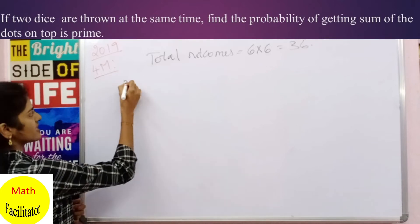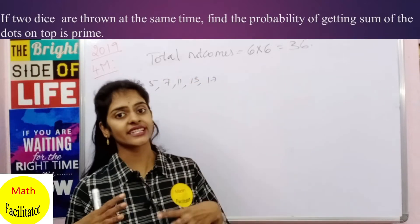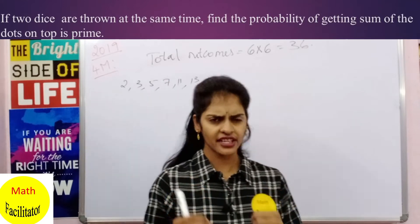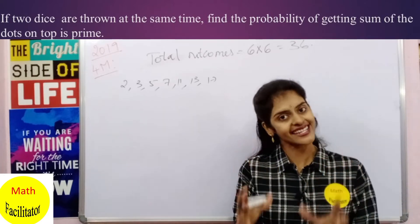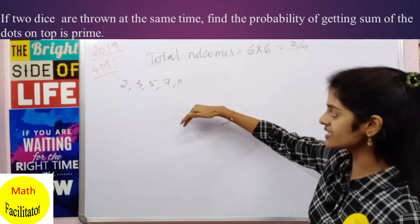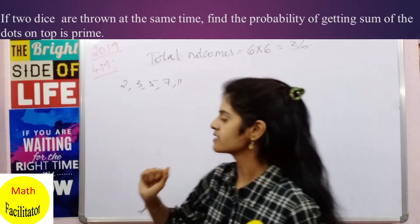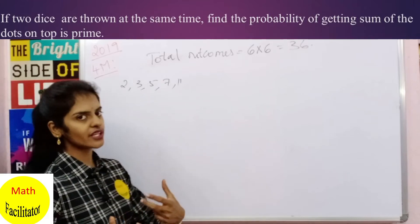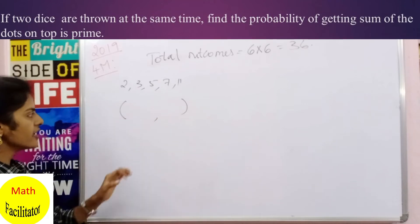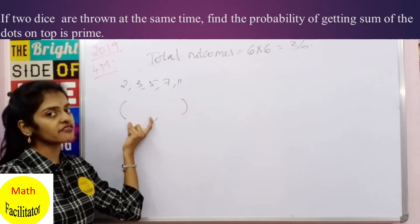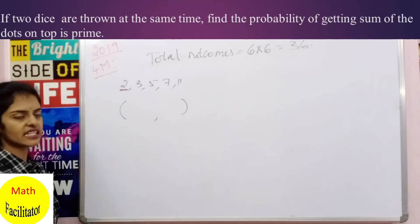The prime numbers are 2, 3, 5, 7, 11, 13... but when two dice are thrown the maximum sum is 6 + 6 = 12, so we only consider primes up to 11. We write possible outcomes as ordered pairs, where the first number is on the first die and the second is on the second die. For a sum of 2, the only combination is (1,1).